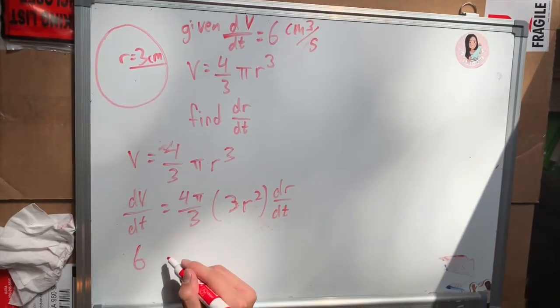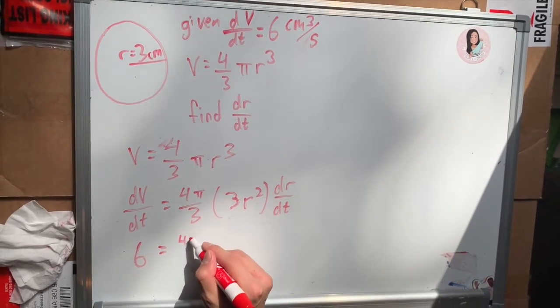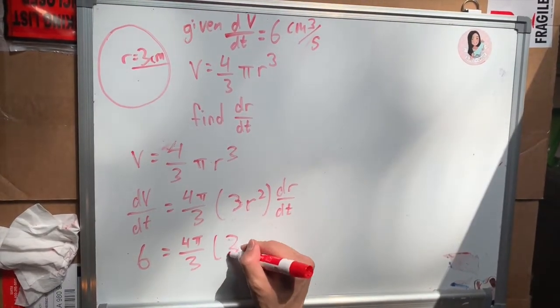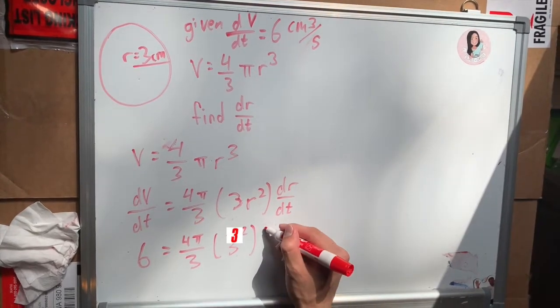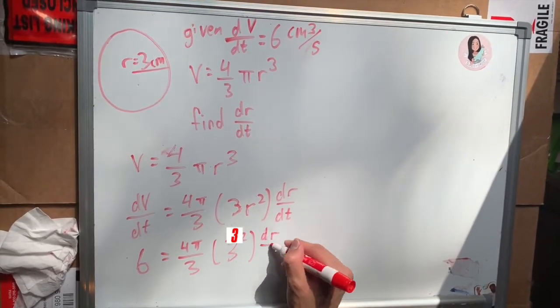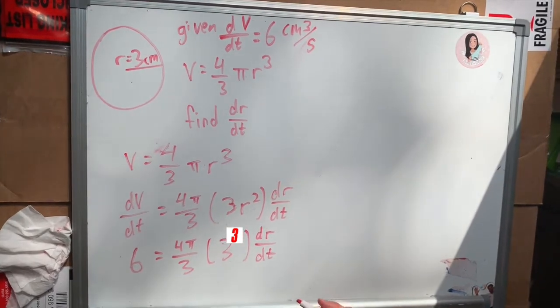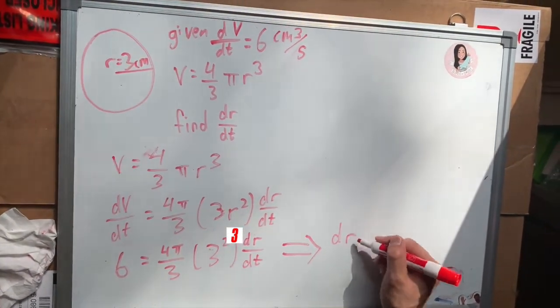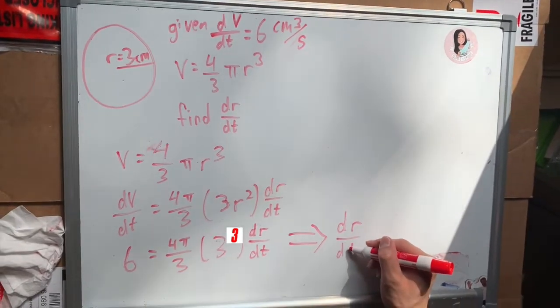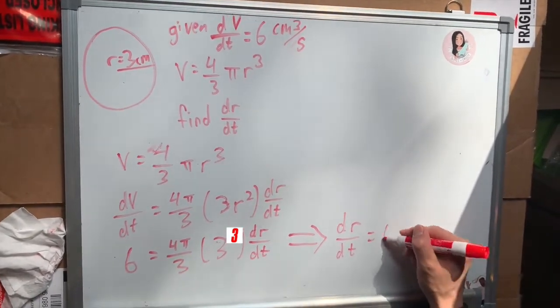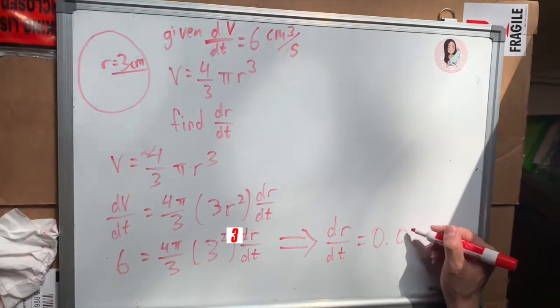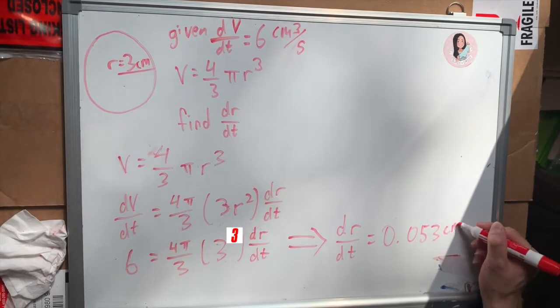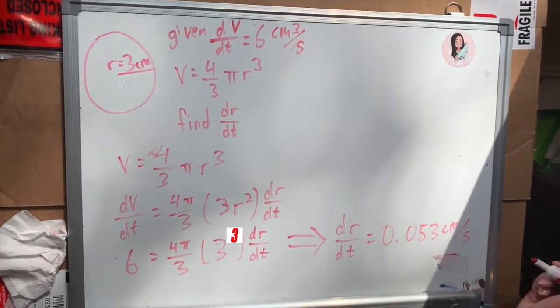And so we can plug in the change in volume over change in time, which is 6, which equals (4π/3) times 3 times 3 squared, which is 3 cubed, times dr/dt. Now we can solve for dr/dt, which gives us dr/dt equals 0.053 centimeters per second.